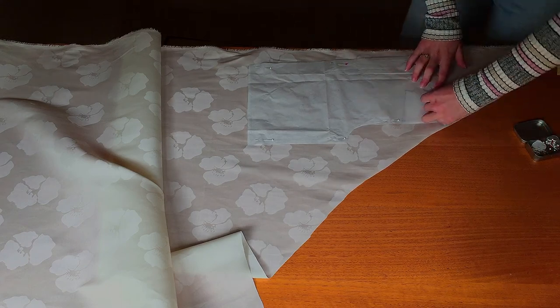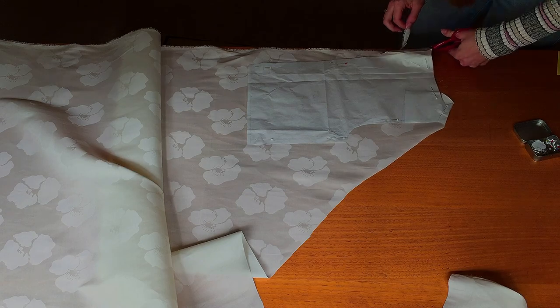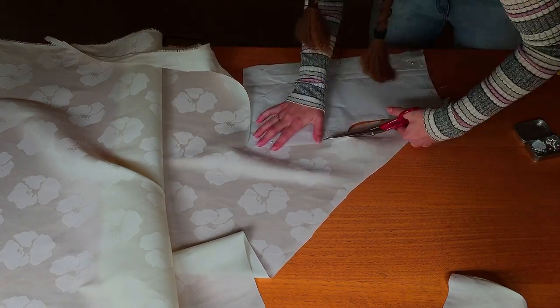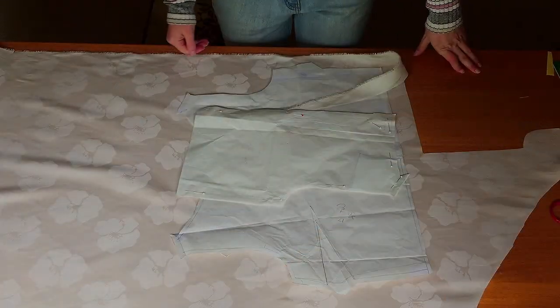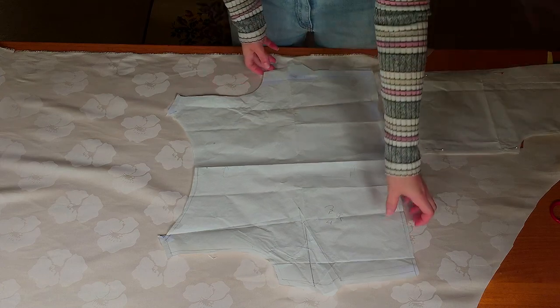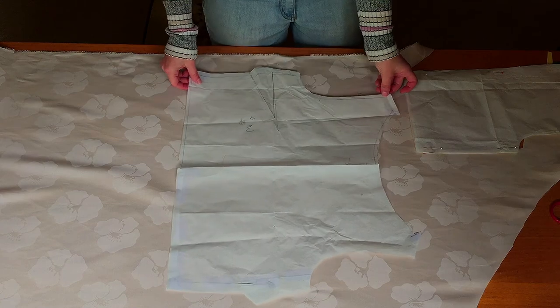As you can see the fabric I'm using has a pattern woven into it so it has a sheen in the background. If like me you're using a fabric that has a sheen, like a satin, then it's important to cut all the pieces facing the same way. I cut the back with the shoulder seam to the right and so I will do the same with the front. If not you'll end up with shadowing which is when one piece reflects the sun darker than the other.